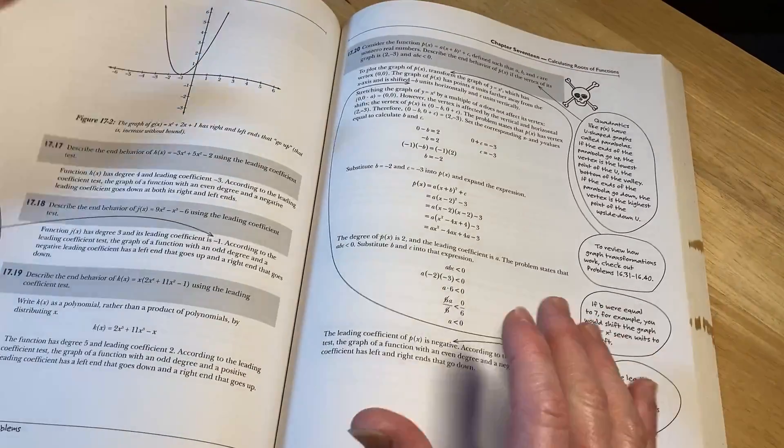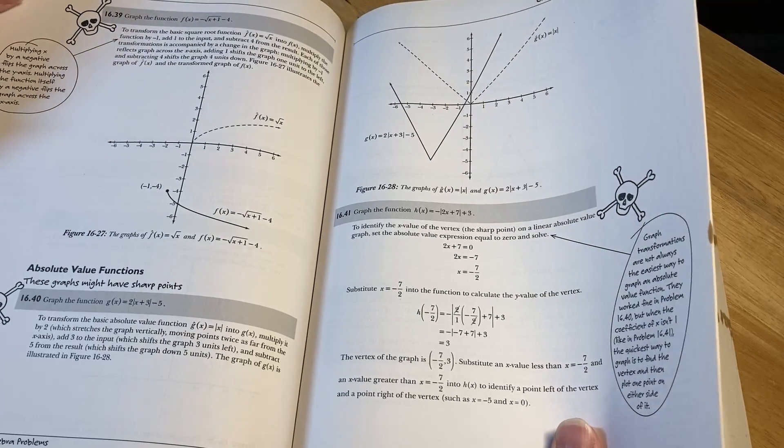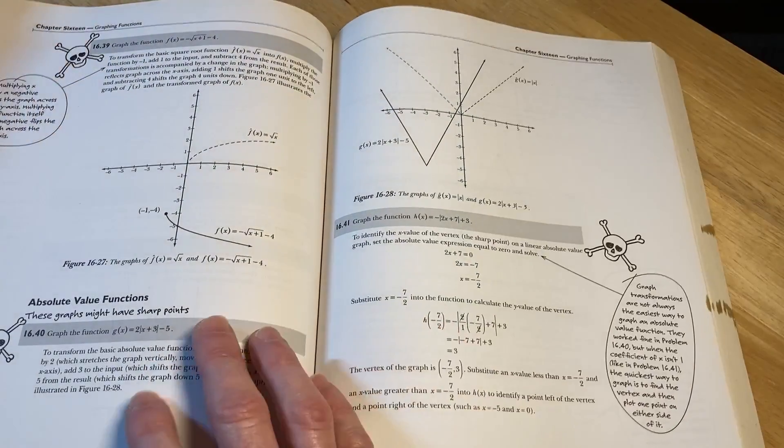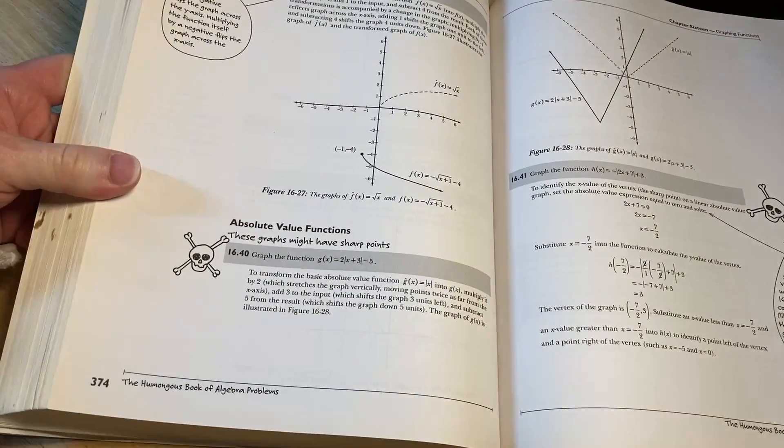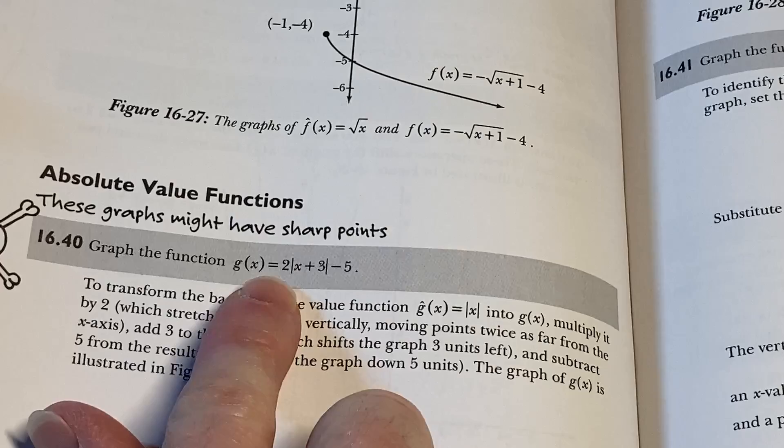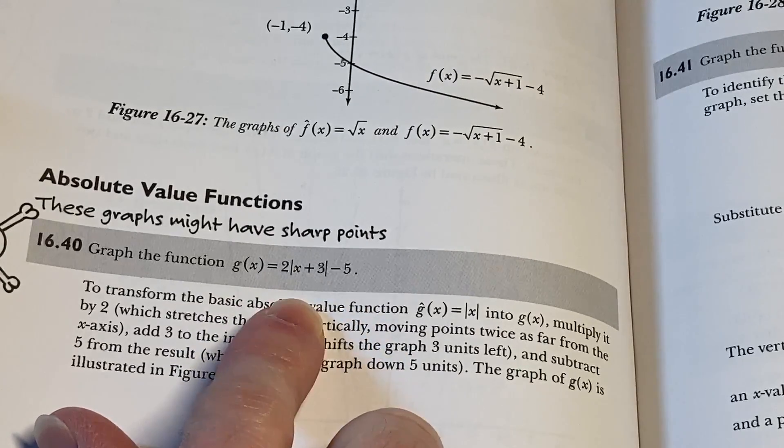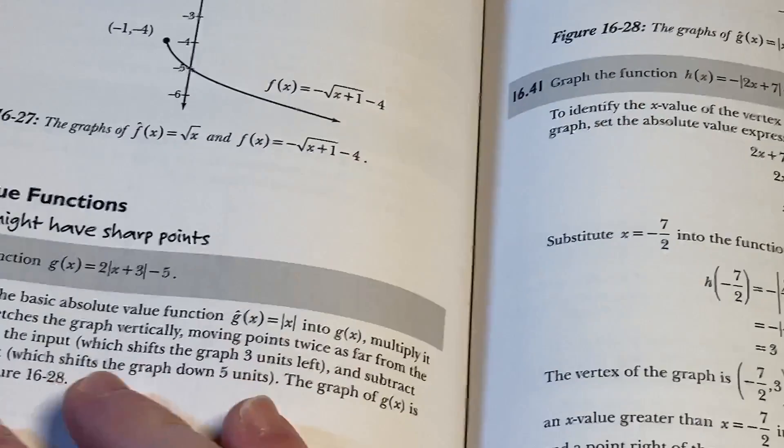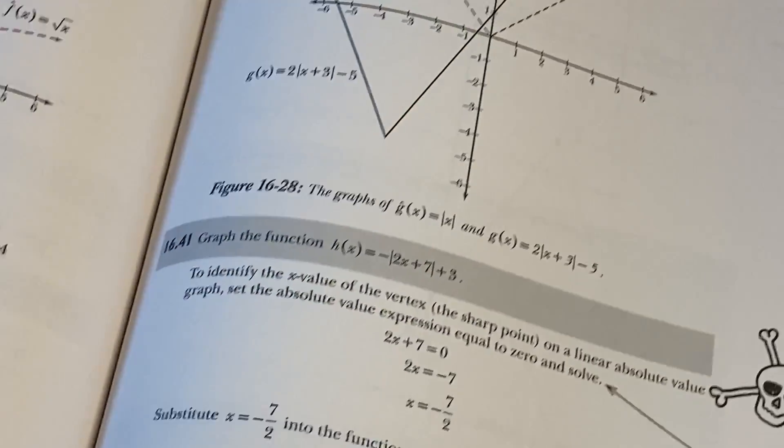There's already a lot of good math books out there, so it's hard to find a reason to make another one. Look at these harder problems. You might say that's not hard, but it's hard relative to what you're doing. You've got two times the absolute value of x plus three minus five. Here's an example, and they explain it. Really good example.